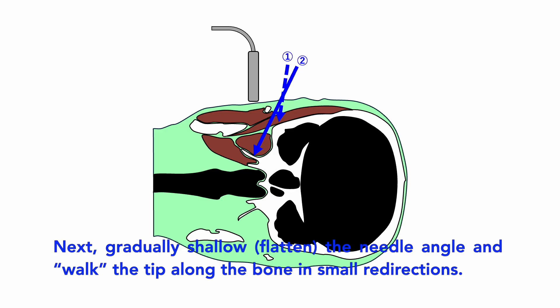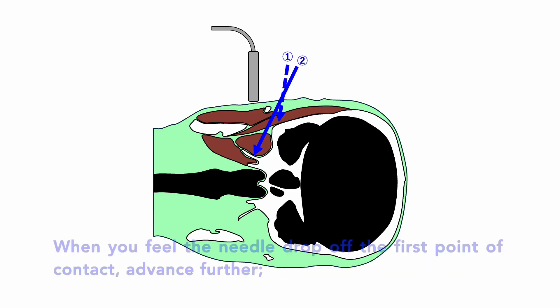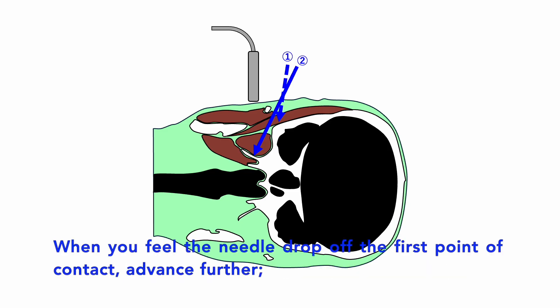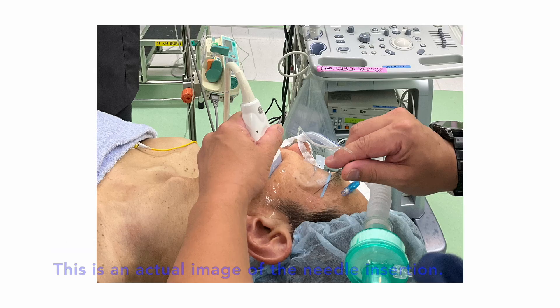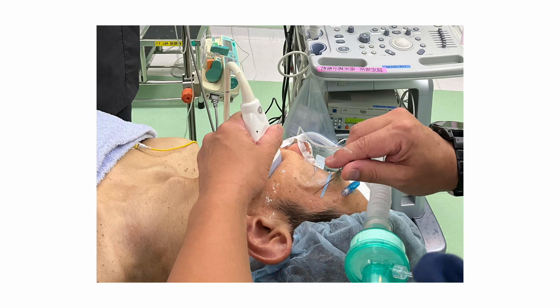Next, gradually shallow the needle angle and walk the tip along the bone in small redirections. When you feel the needle drop off the first point of contact, advance further. At a depth of about four to five centimeters, you will contact the lateral pterygoid plate. This is an actual image of the needle insertion — the needle is inserted along the extended line of the palpebral fissure.